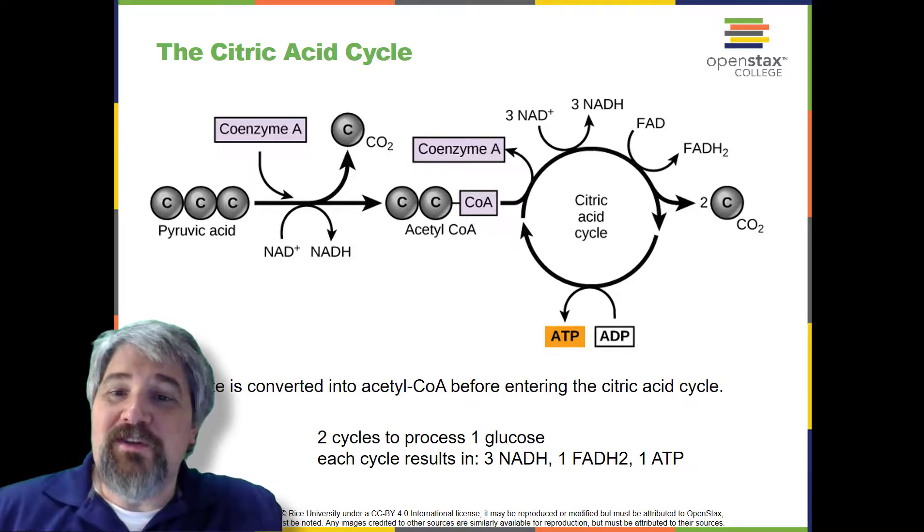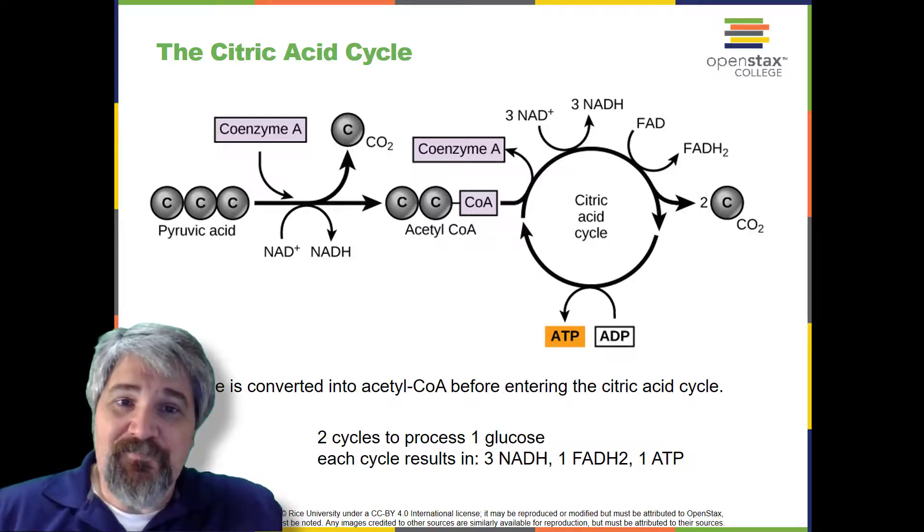It takes two turns of the cycle to process the equivalent of one glucose molecule. Each turn of the cycle forms three high-energy NADH molecules and one high-energy FADH2 molecule. These high-energy carriers will connect with the last portion of aerobic respiration to produce ATP molecules. One ATP, or an equivalent, is also made in each cycle.